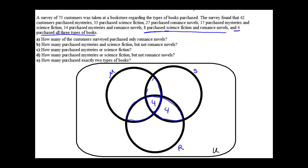14 purchased mysteries and romance novels, so that section of the Venn diagram needs to contain 14 total. We've already accounted for 4, so this piece would have 10 remaining. Then we do the same thing with 17 purchased mysteries and science fiction. 17 total, 4 have already been accounted for, so we would have 13 remaining.